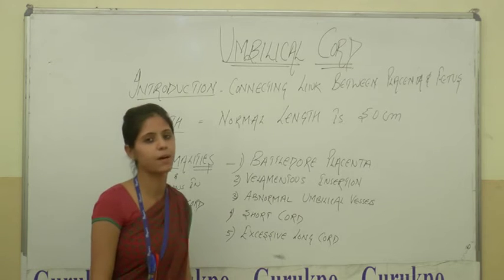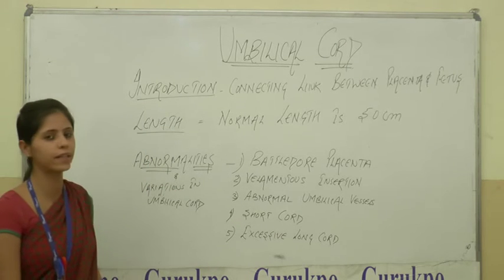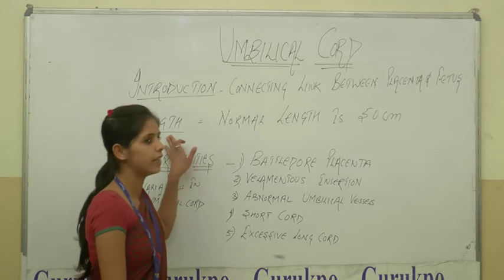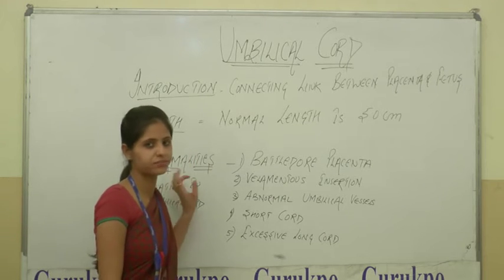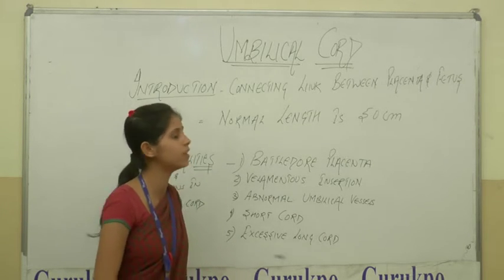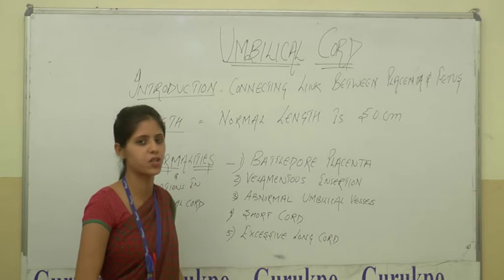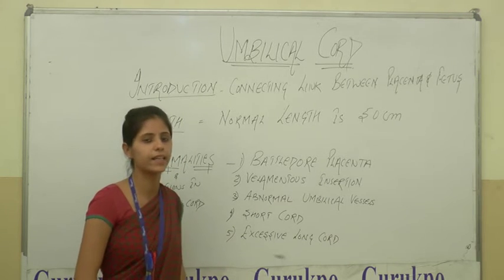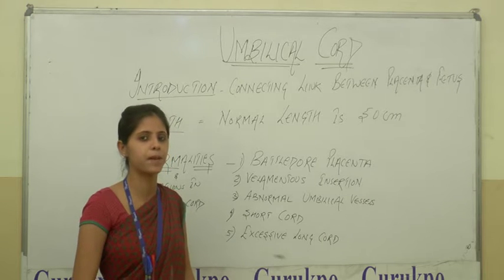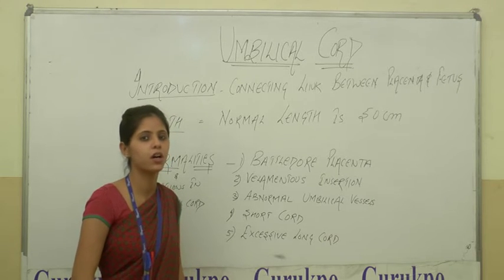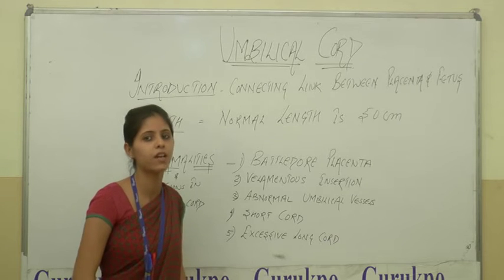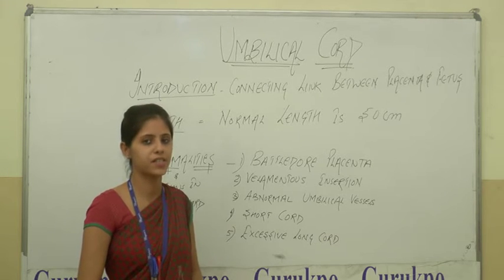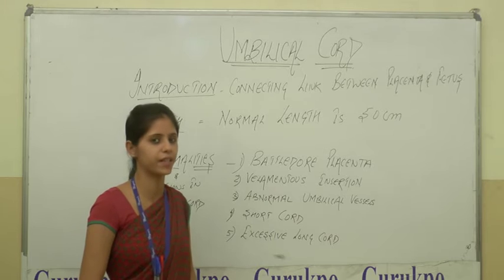We will discuss about the introduction of Umbilical Cord, then Length, then Abnormalities. Firstly, we will discuss about the definition of Umbilical Cord. It is a connecting link between the fetus and placenta. It has two umbilical arteries and one umbilical vein, which supply blood to the fetus through the placenta.